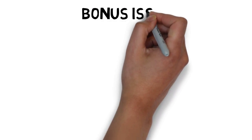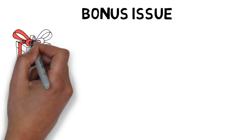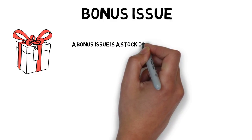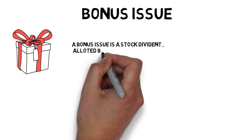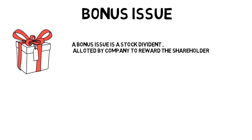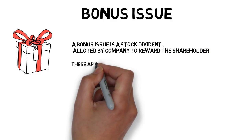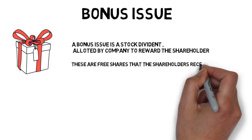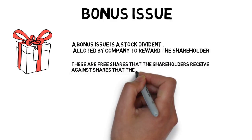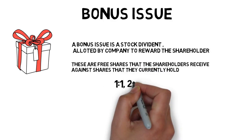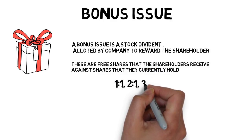The second corporate activity is bonus issue. A bonus issue is a stock dividend allotted by a company to reward shareholders. These are free shares that the shareholder receives against shares that they currently hold. These are declared in ratios like 1:1, 2:1, or 3:1. For every 1 share held, they will get 1 additional share.